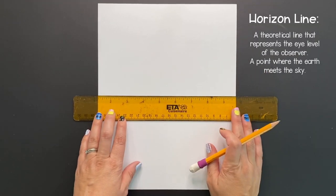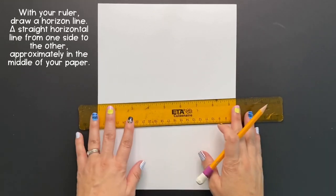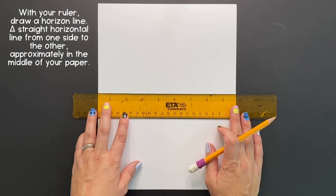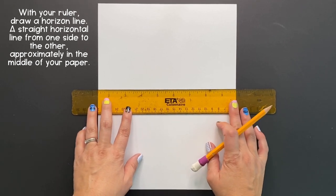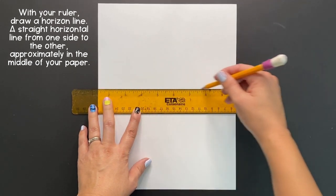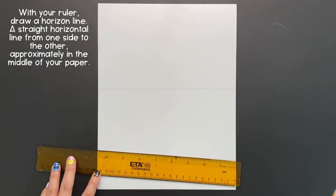We're going to begin by drawing a horizon line, a theoretical line that represents the eye level of the observer, a point where the earth meets the sky. In order to do this we have to draw a straight horizontal line from one side to the other, approximately in the middle of your paper.